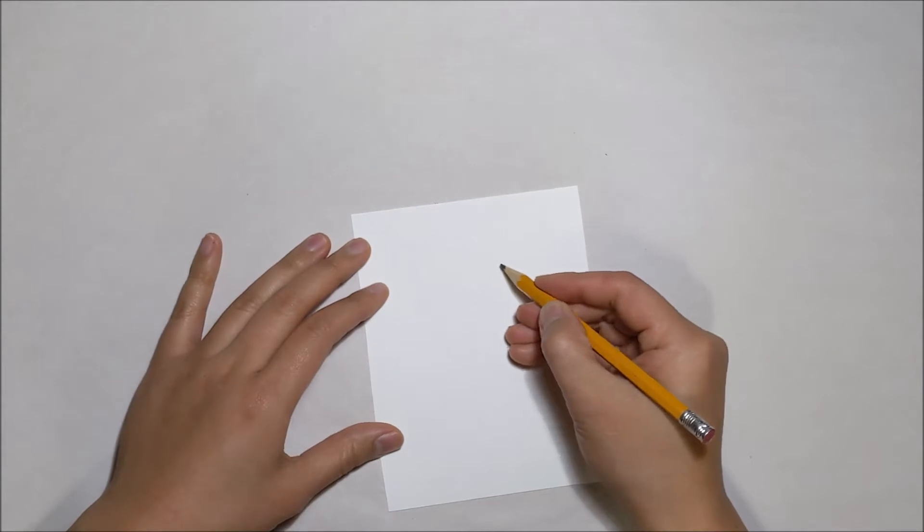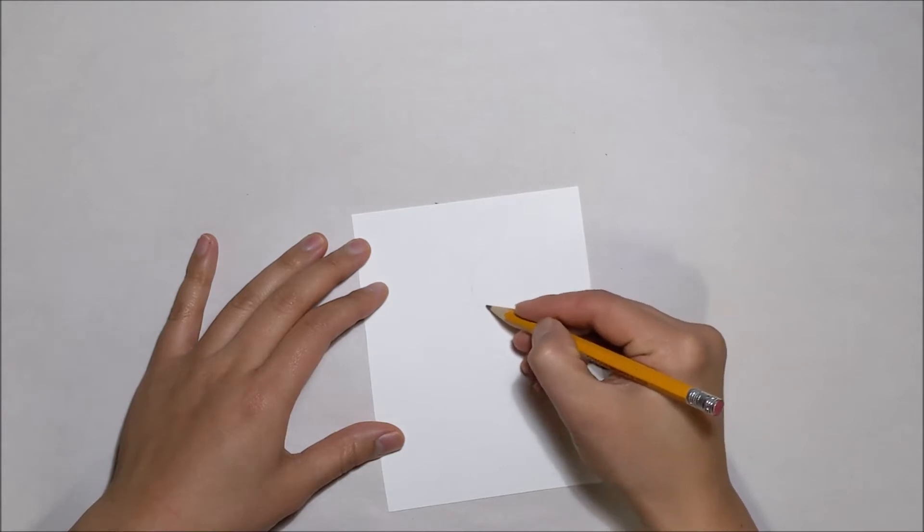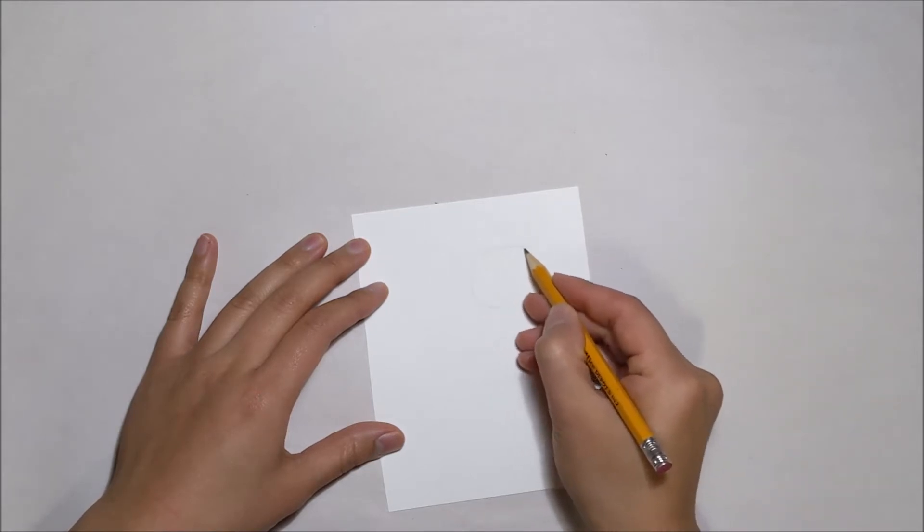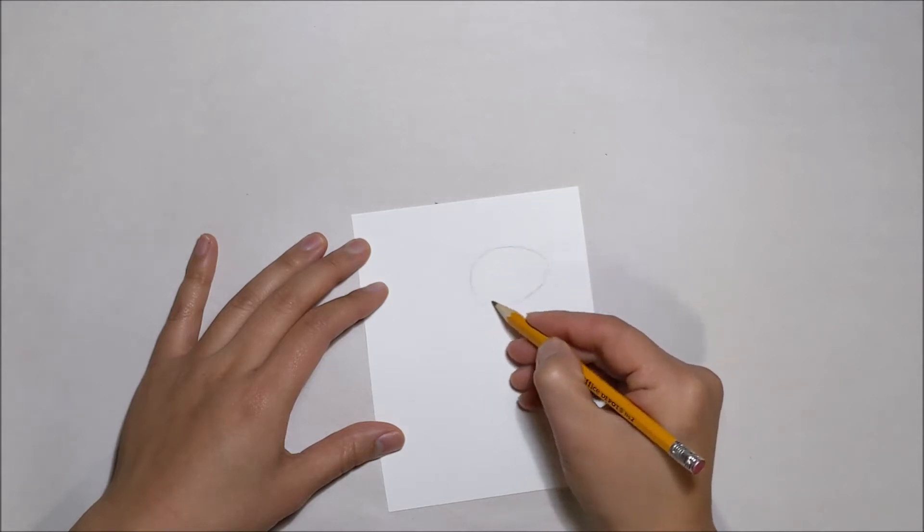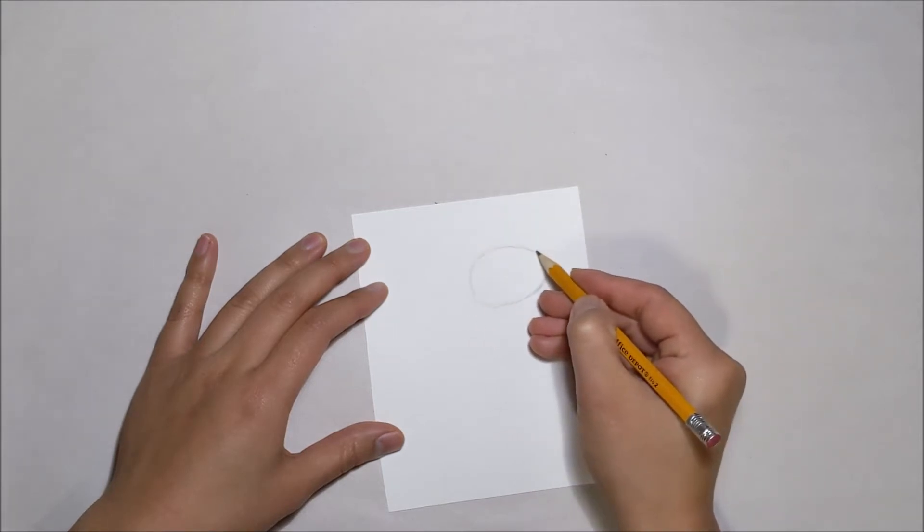Now let's get started on drawing the character. First we draw the face cover and that is going to be a shape of an egg almost. Here I have kind of like a C line and then I will go towards the right that will be a little bit more pointy, and here is that egg shape.